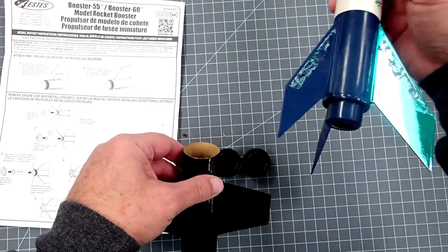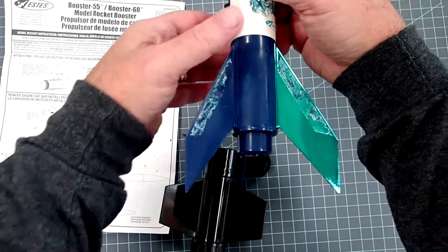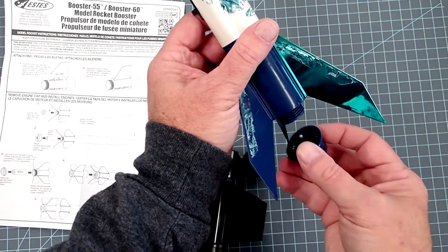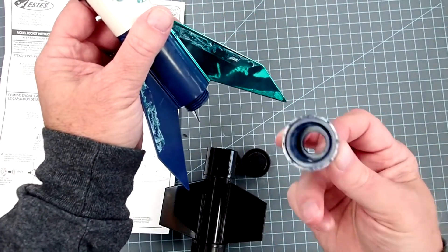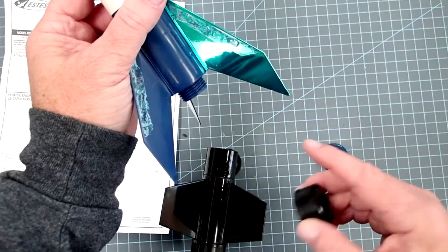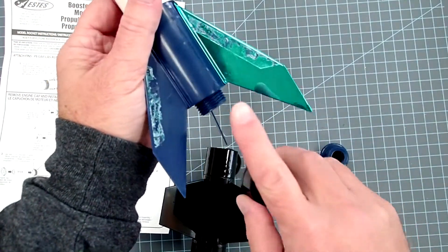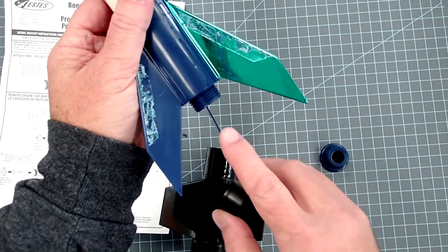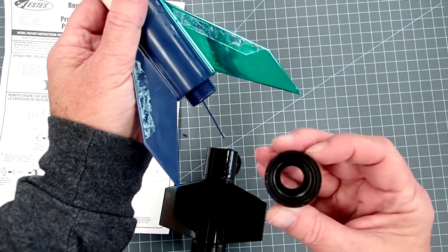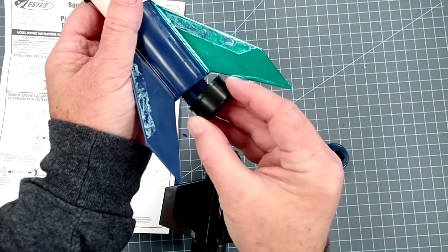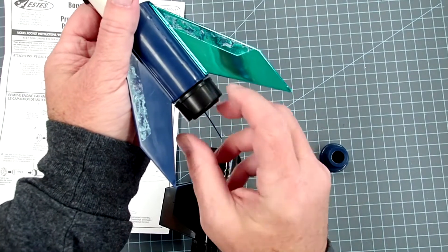And then this fits onto the actual rocket here. You have to remove the engine retainer. And this is one of the necessities. These ARF rockets have the screw-on motor retainer. And so this adapter gets screwed on here.